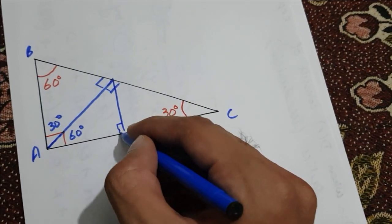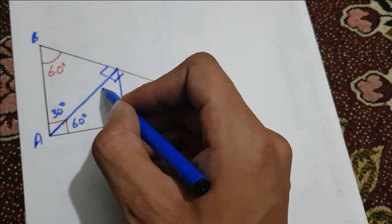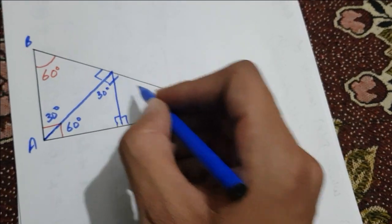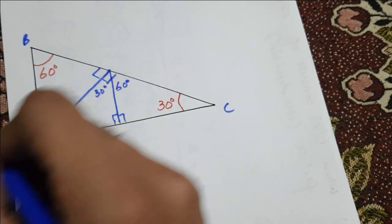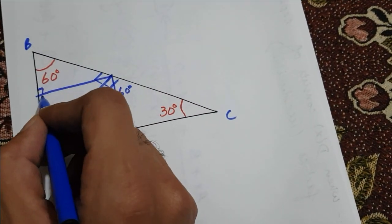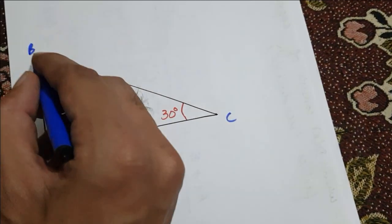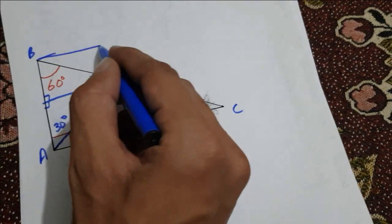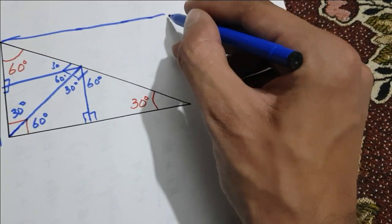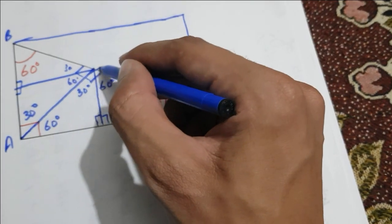We continue this procedure and divide the right triangle further. We get two right angles; this one is the complement of 60 degrees so we get 30 degrees here, and this one is the complement of 30 degrees so we get 60 degrees here. On the other hand, when we divide the other right triangle we get 30 degrees here and 60 degrees here.